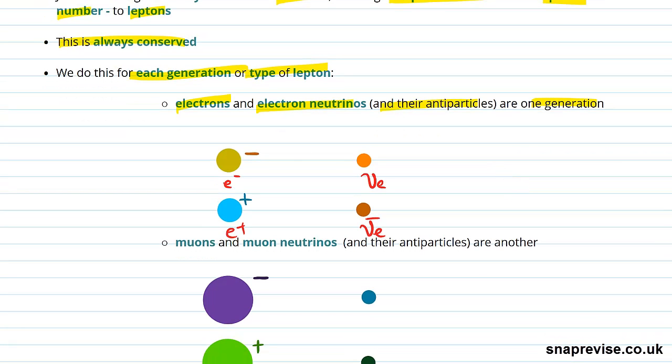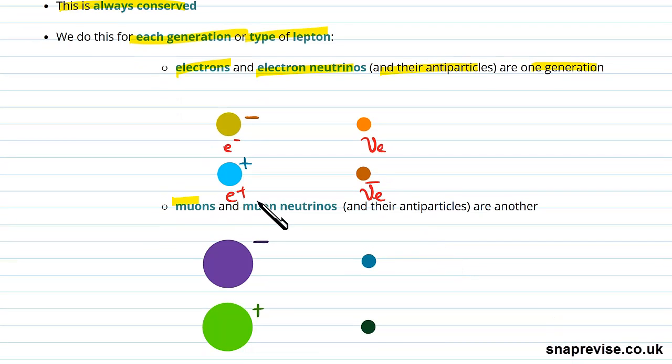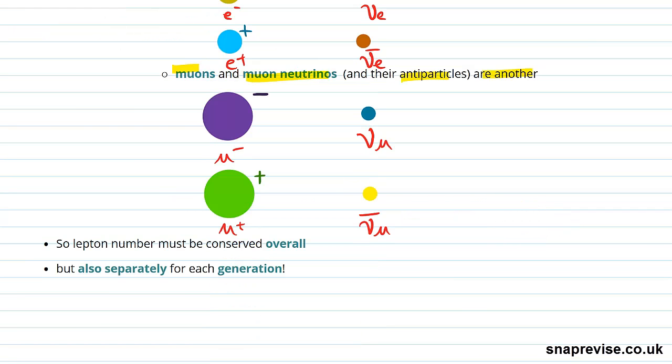That means we have the electron, the positron, the electron neutrino, and the electron anti-neutrino. Then muons and muon neutrinos and their antiparticles are another generation.